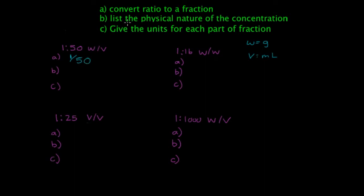When you list the physical nature of the concentration, they're wanting to know what you're measuring. So what does the W represent and what does the V represent? That's going to be weight. The W is going to be weight per volume. That's what the WV means.